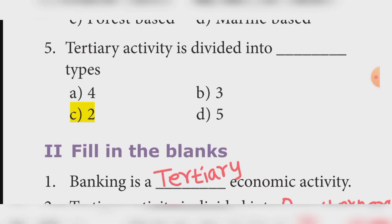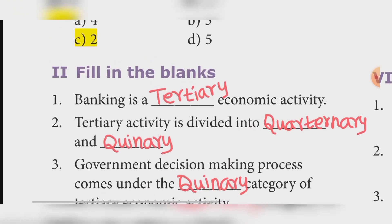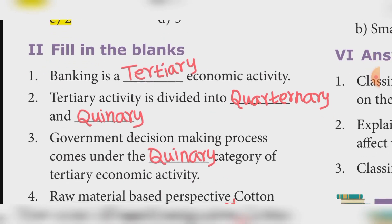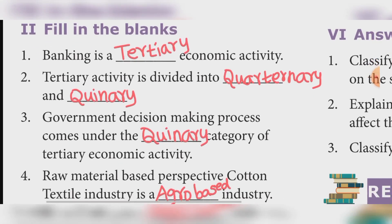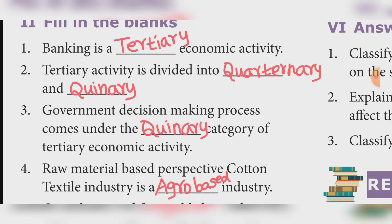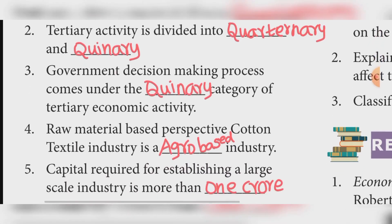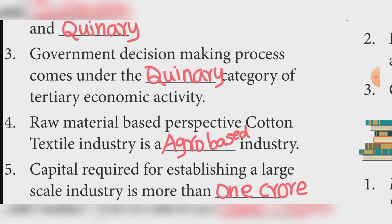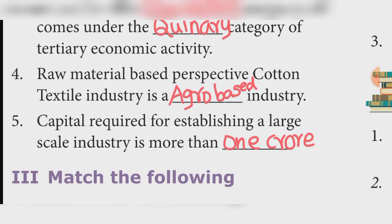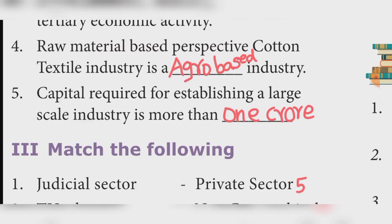Fill in the blanks. Banking is a tertiary economic activity. Tertiary activity is divided into quaternary and quinary. Government decision-making process comes under the quinary category of tertiary economic activity. Cotton textiles industry is an agro-based industry. Capital required for establishing a large scale industry is more than one crore.